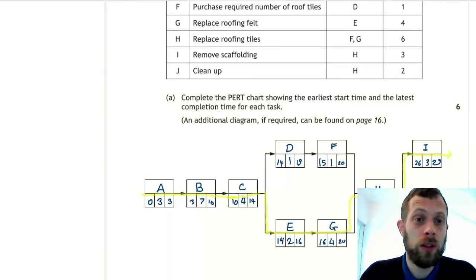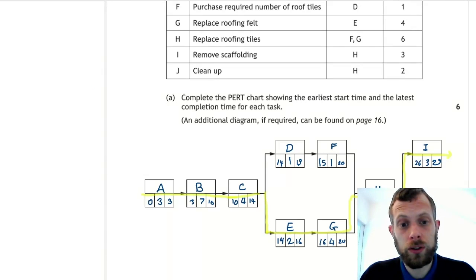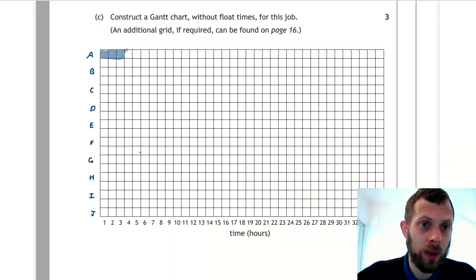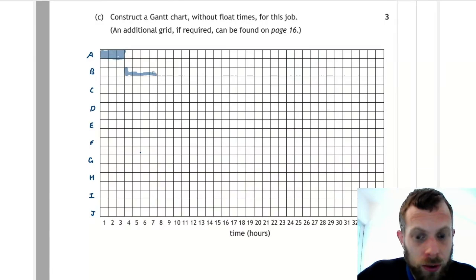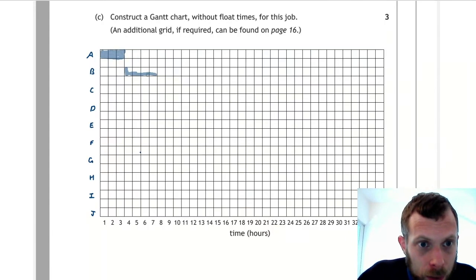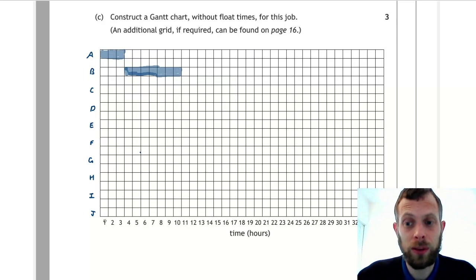So task B starts at three and carries on for seven hours, so we have to shade in seven boxes starting at three. Now I think that the scale here is a bit confusing. You can see that one is in the middle of the box, which isn't how you normally do a scale. However, it's how this scale is done on this Gantt chart.